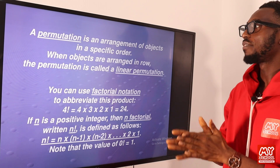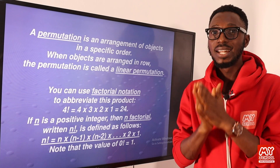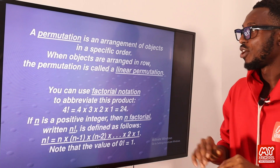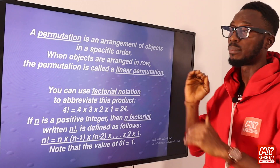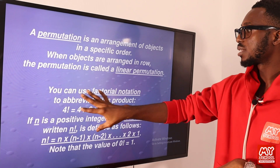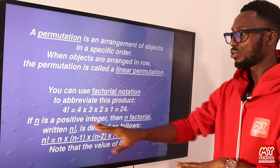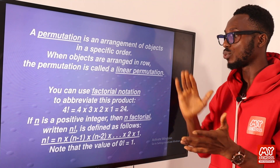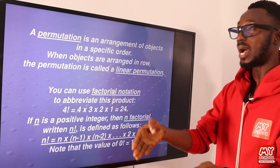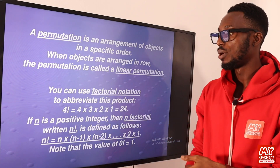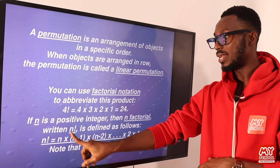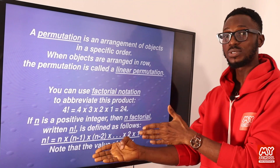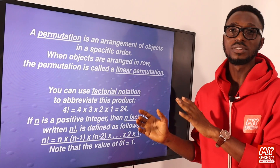A permutation is an arrangement of objects in a specific order — order matters, order counts. When objects are arranged in rows, we refer to this as linear permutation. We can use factorial notation to abbreviate these products: four factorial in descending order is 4×3×2×1, and in ascending order is 1×2×3×4. If n is a positive integer, then n factorial is defined using that notation. Note again that the value of zero factorial equals one.